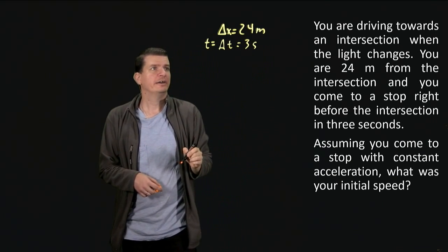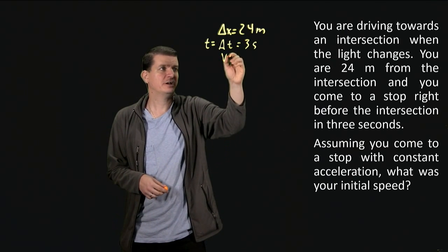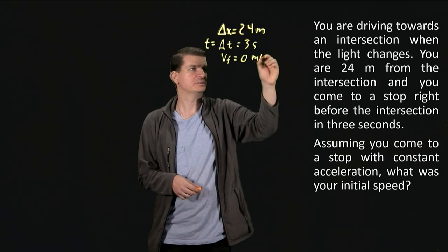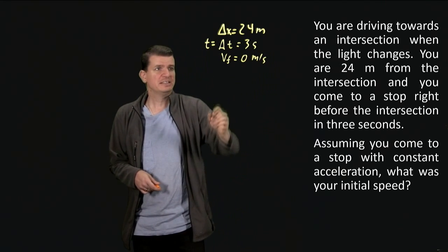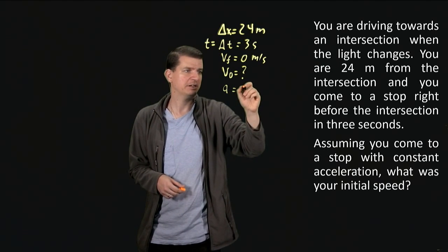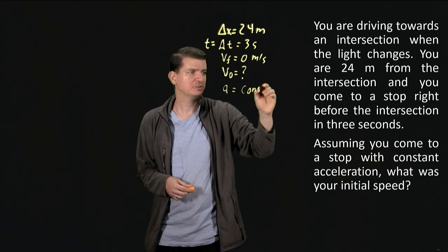We know that v final is zero because we come to a rest, so that's meters per second. V zero is what we want to know and we know only about acceleration partial information which is that it's constant.